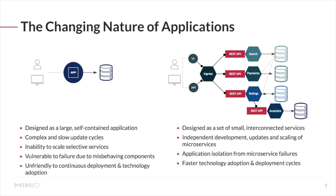This change started to affect the way infrastructure is being designed as well. Hyperscalers took the lead in this — the microservices approach allowed them to scale dramatically. Faster technology adoption made it a must-have for most of the industry across different business lines and enterprises. With that approach, object storage, as well as S3 compatibility, became critical and very important for developing in this new wave with microservices.